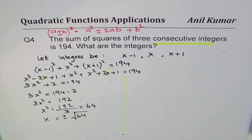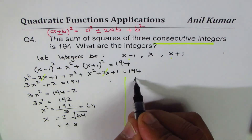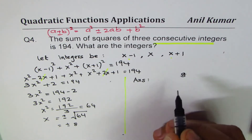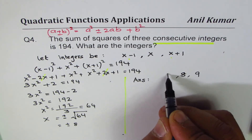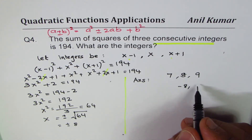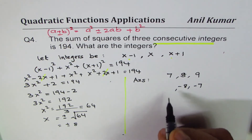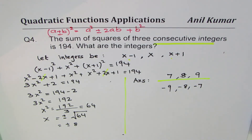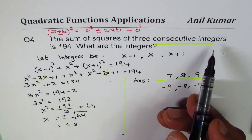We get x equals plus or minus 8. If x is positive 8, then one more is 9 and one less is 7, giving the set 7, 8, 9. If x is minus 8, then one more is minus 7 and one less is minus 9, giving the set minus 9, minus 8, minus 7. So we have two sets of answers — that is why the problem uses the term 'integers.'